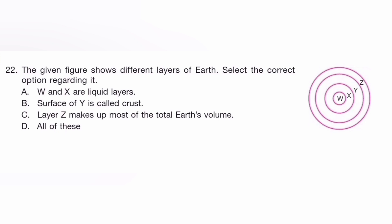The given figure shows different layers of Earth. Select the correct option regarding it. A: W and X are liquid layers. Surface of Y is called crust. Layer of Z makes up most of the total earth volume. All of these. The answer is B, surface of Y is called crust.